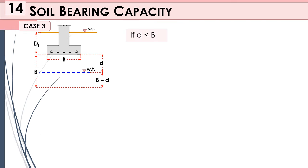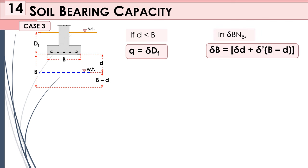Case 3 is when the water table drops further below the footing. Here df is still the distance from the soil surface to the bottom of the footing, and d is the distance from the bottom of the footing down to the water table. If d is less than B, then q = γdf, and the γBNγ term uses: γd + γ′(B − d), where γ′ = γsat − γwater and B is the base of the footing.